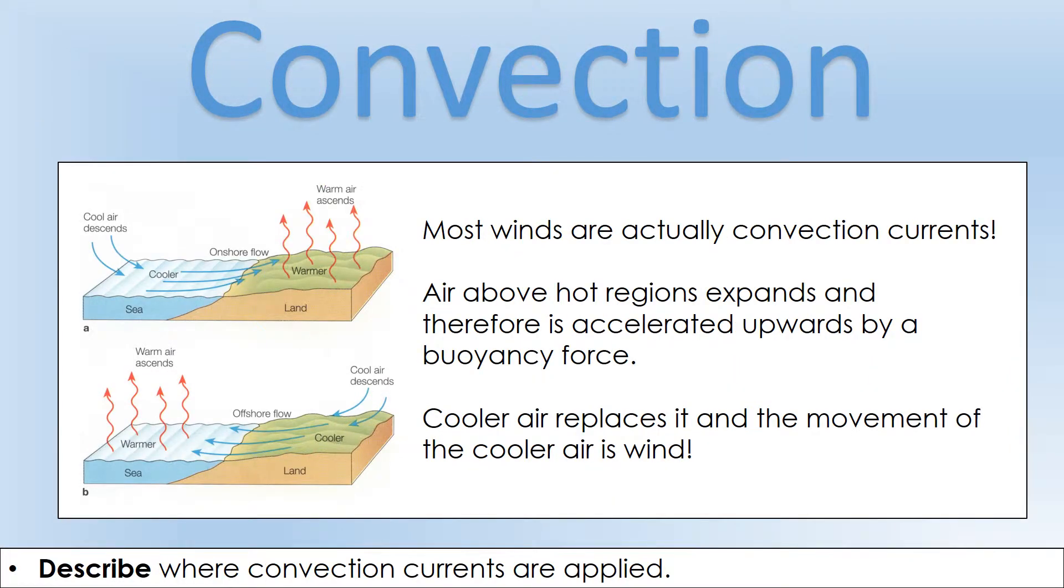Let's look at some scenarios where convection is responsible for things you will see all the time. Wind is actually a convection current. There will be a region that is warmer than another one, and anywhere you have a warm region, the air above it is going to expand and its density is going to decrease. Air over a hotter region is going to rise due to the buoyancy force and it's going to be replaced with cooler air. That movement of the cooler air is what we call wind.